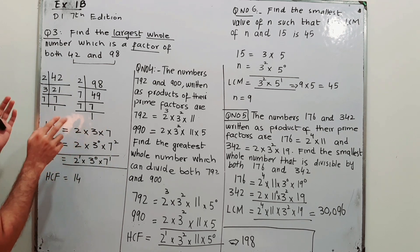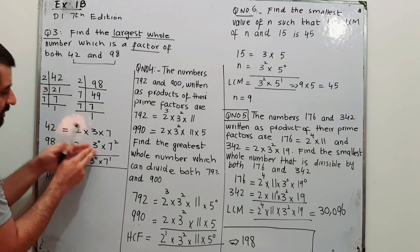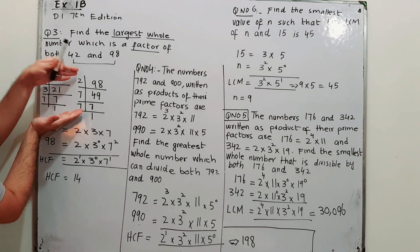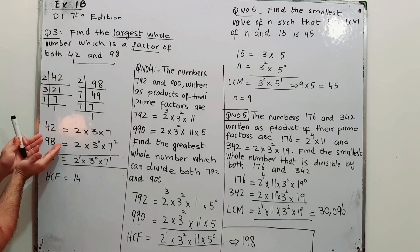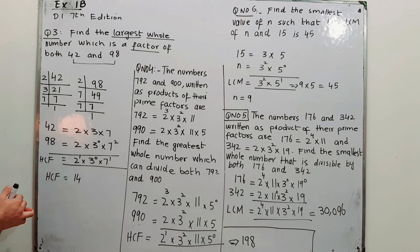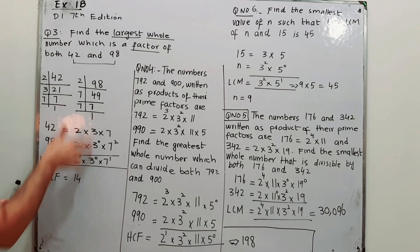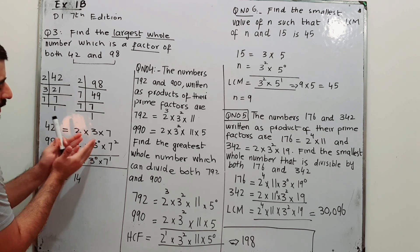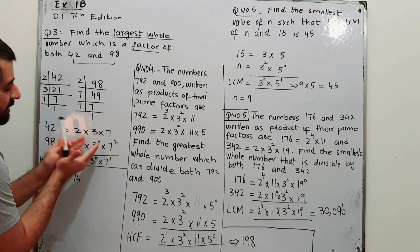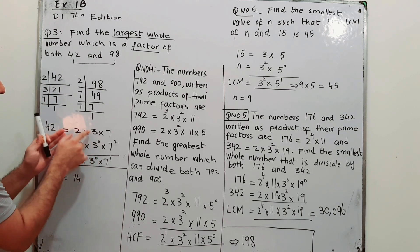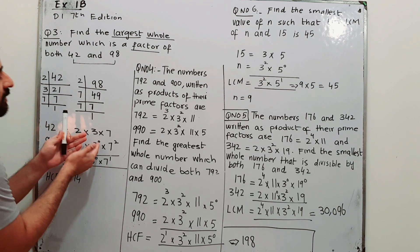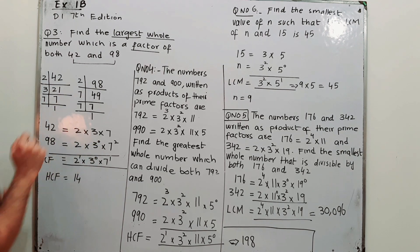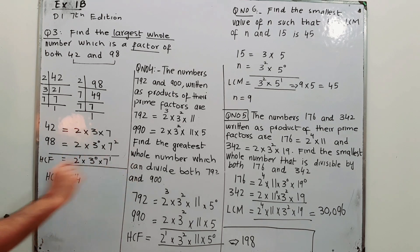Keep in mind: 7 should be in the column of 7, 2 should be in the column of 2. We don't have any 3 in the factors of 98 — that's 3 to the power 0. So instead of keeping the space empty, you write 3⁰ to complete the column.